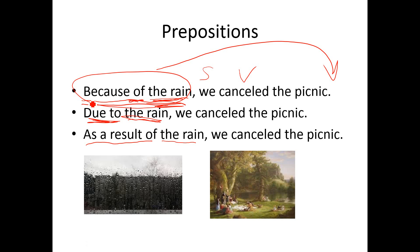These three expressions — 'because of,' 'due to,' 'as a result of' — show the relationship between the ideas. They show that the rain is the cause, and the result is the canceled picnic.